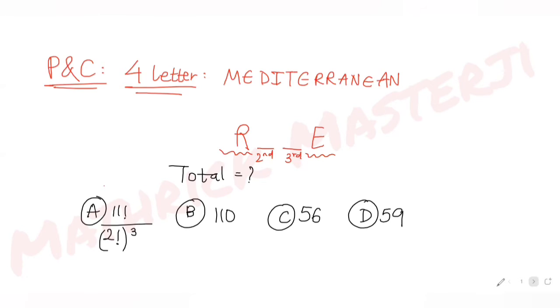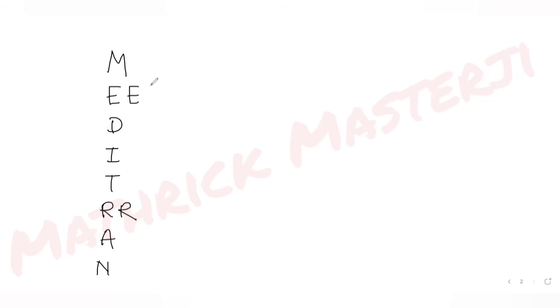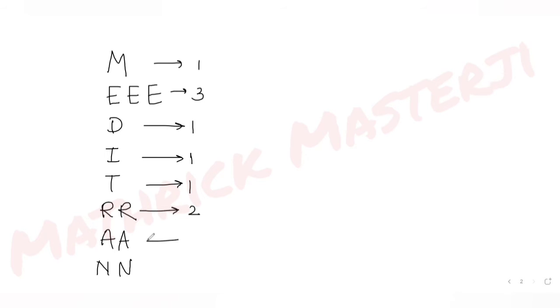Now let's look at the word MEDITERRANEAN and find how many different letters are present. We have: one M, three E's, one D, one I, one T, two R's, two A's, and two N's. So that is the full collection of letters we have available to form words.